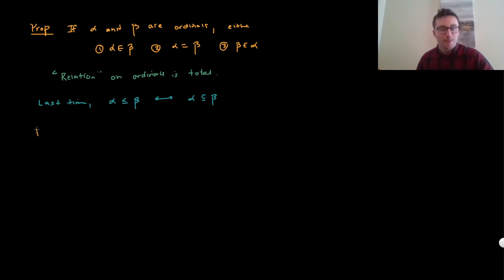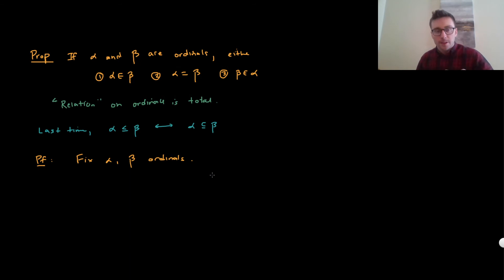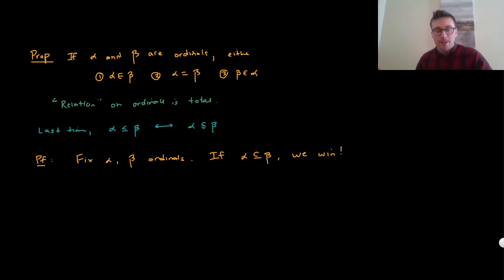Let alpha and beta be ordinals. Without loss of generality, if it were the case that alpha is a subset of beta, then we're done by our proposition from last time. If alpha is a subset of beta, we win, because then alpha is less than or equal to beta, which means one of those two cases holds.